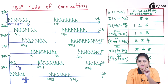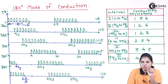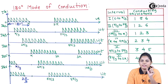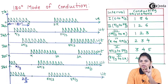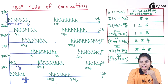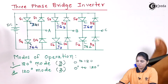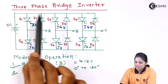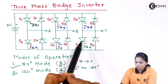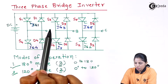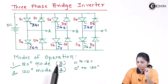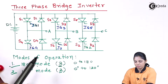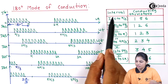In 180-degree conduction mode, the SCR that is on will remain on for 180 degrees, but at any given time, exactly 3 SCRs will remain on. We have to find out which 3 SCRs are on at each instant. We have a total of 6 SCRs — 1, 2, 3, 4, 5, 6 — and out of these 6, exactly 3 will remain on at any time. We need to determine which 3 SCRs are conducting at each particular time interval.